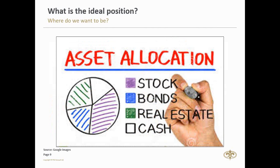Let's talk about asset allocation. It's an implementation of investment strategy — the idea is to balance risk and reward by adjusting the percentage of each asset in your investment portfolio according to your risk tolerance, goals, and investment timeframe. Conventionally, there were four main asset classes: equities or stocks, fixed income or bonds, real estate or property, and cash and equivalents. Each has different levels of risk and return, and they also behave differently over time.